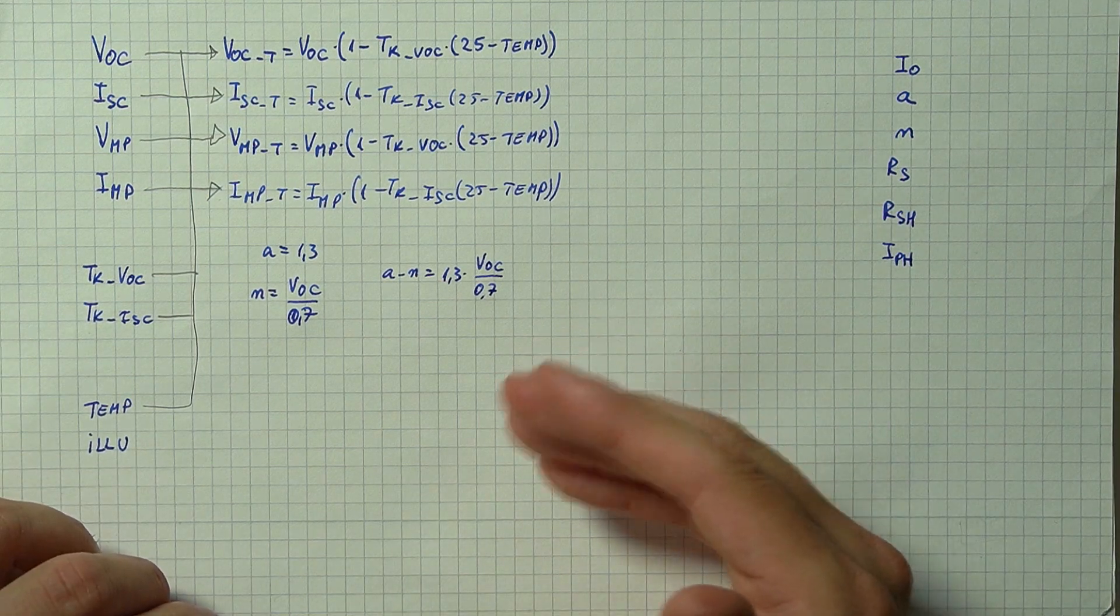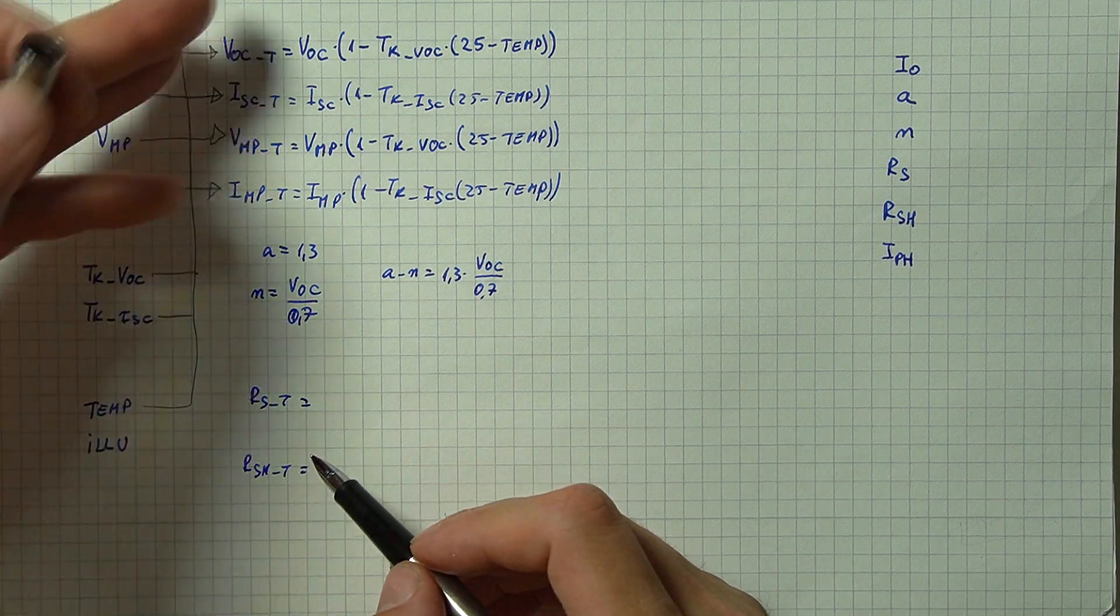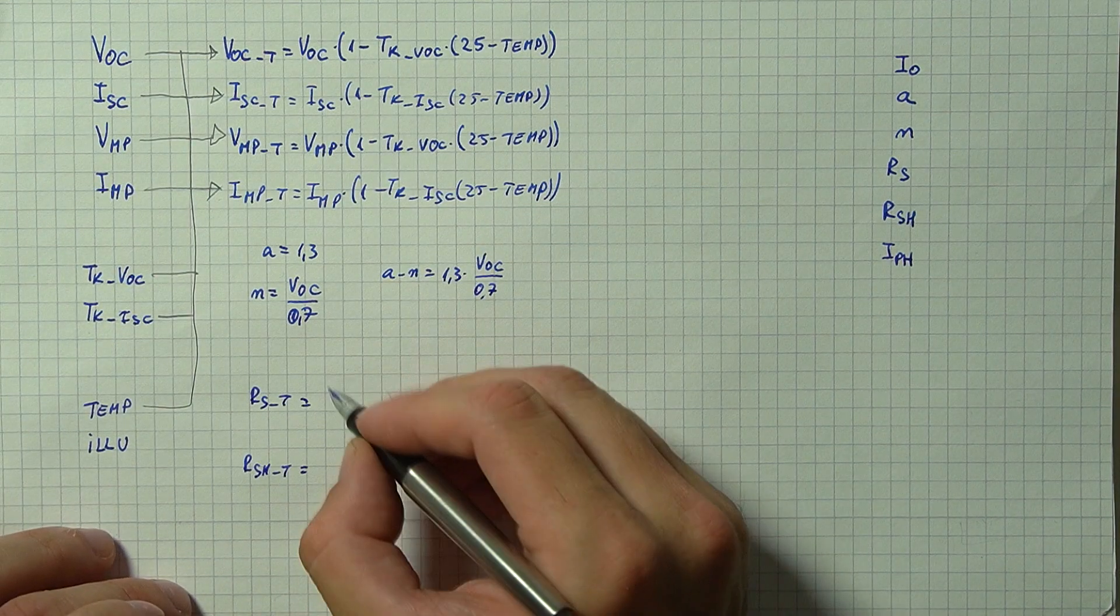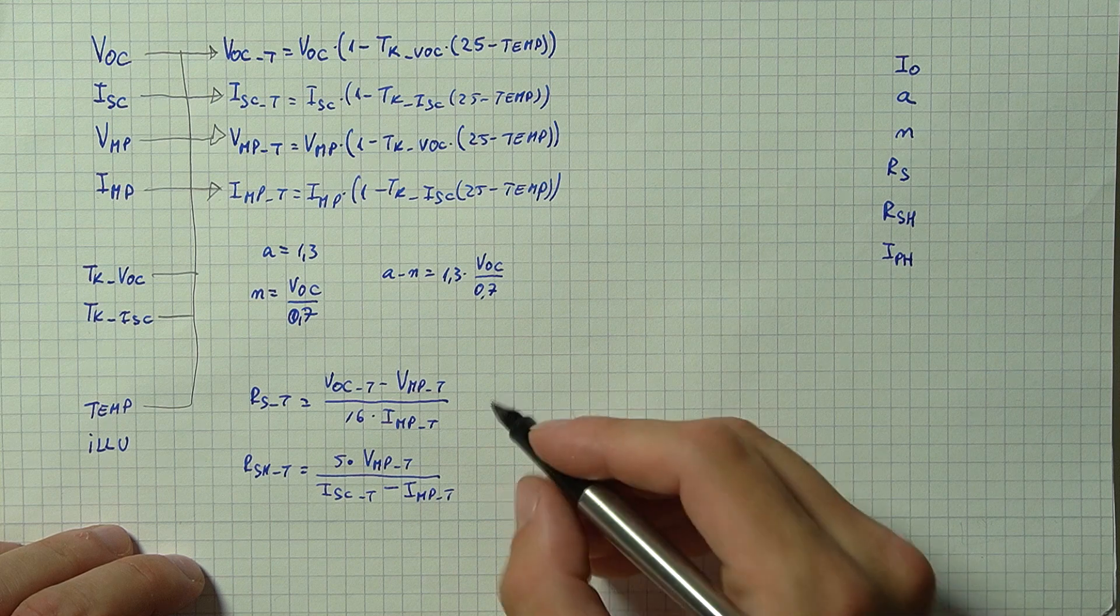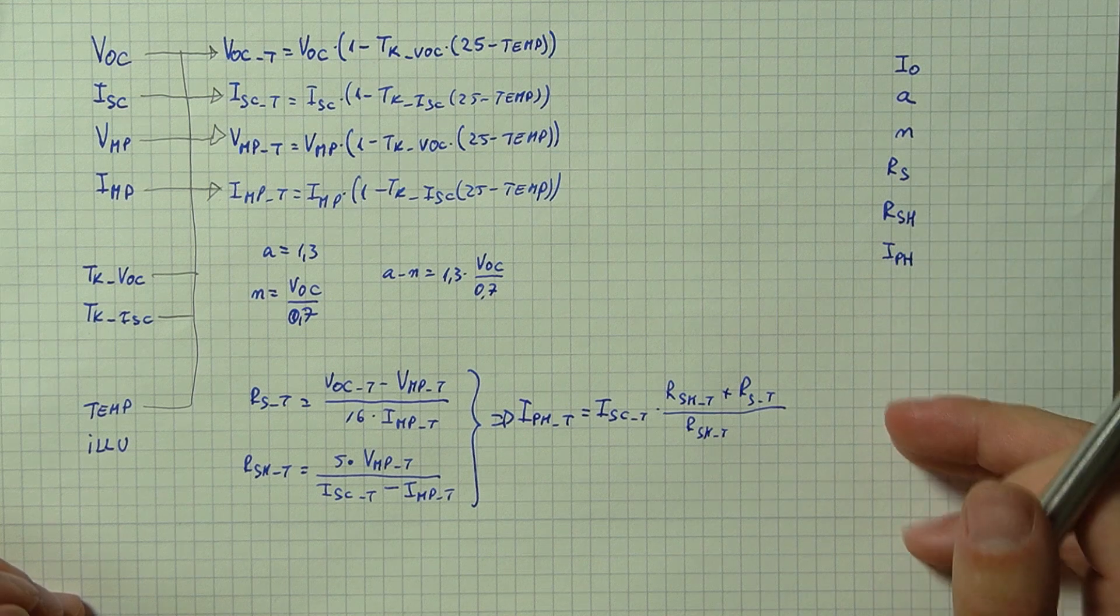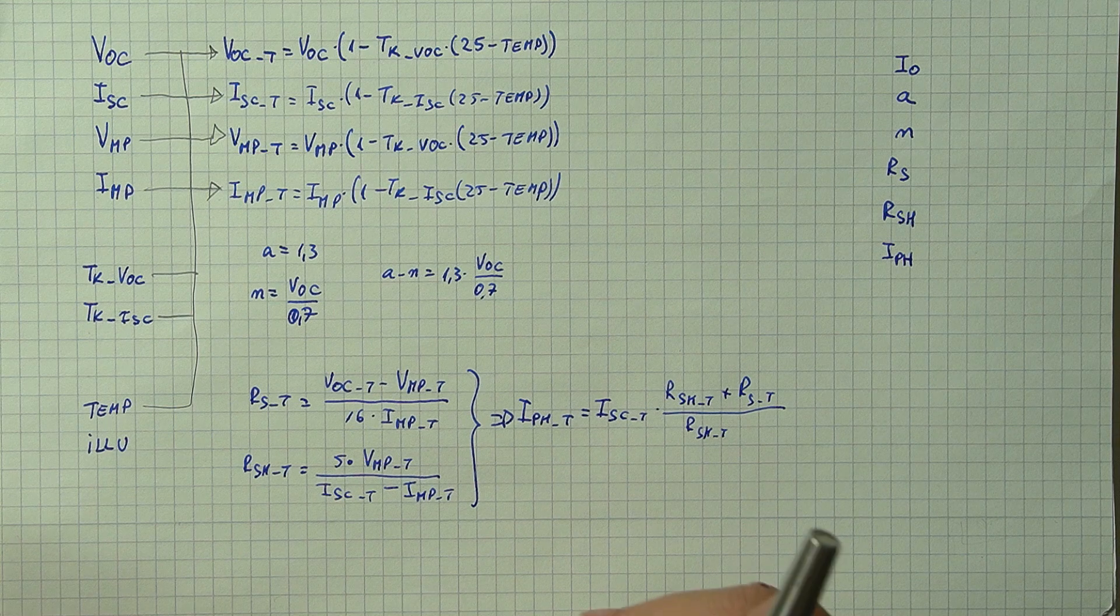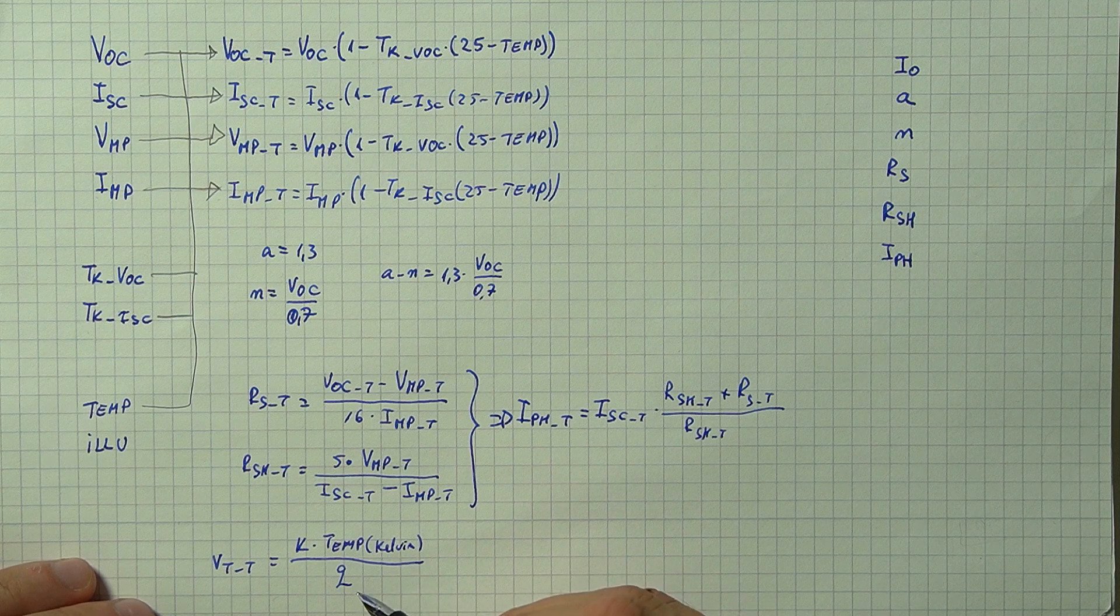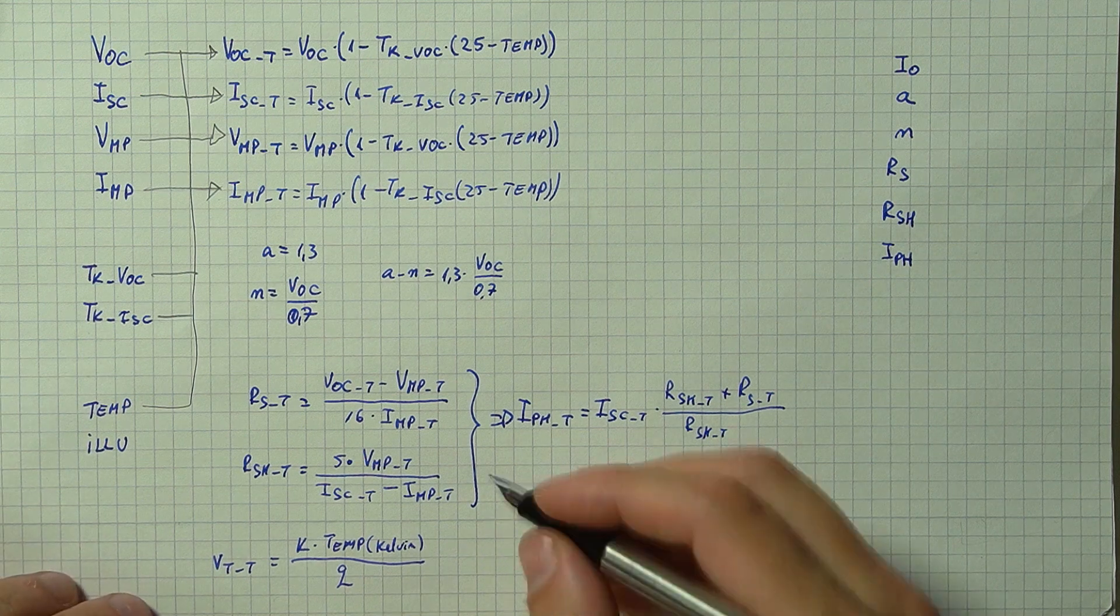Now regarding the other parameters we will need our series and shunt resistances. I will calculate these using the parameters expressed at the temperature of work, that's why I put the underscore T in here, and then using these parameters and our short circuit current we can work out what our initial photo current would be.